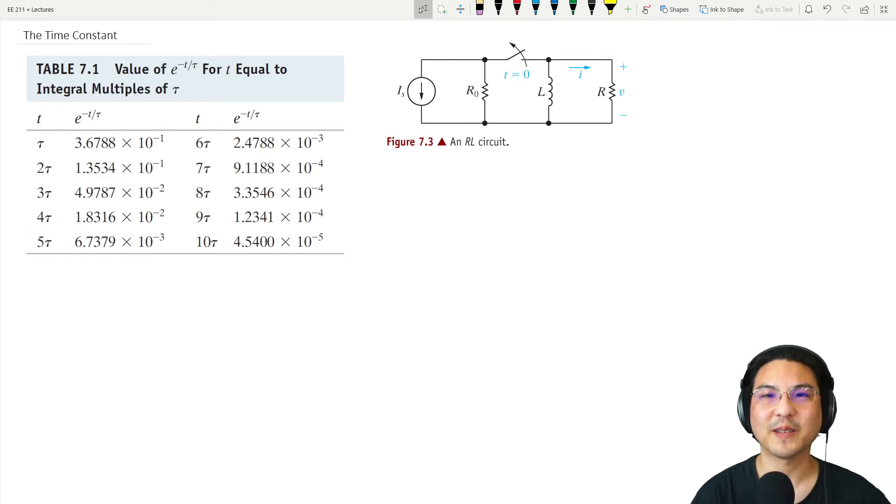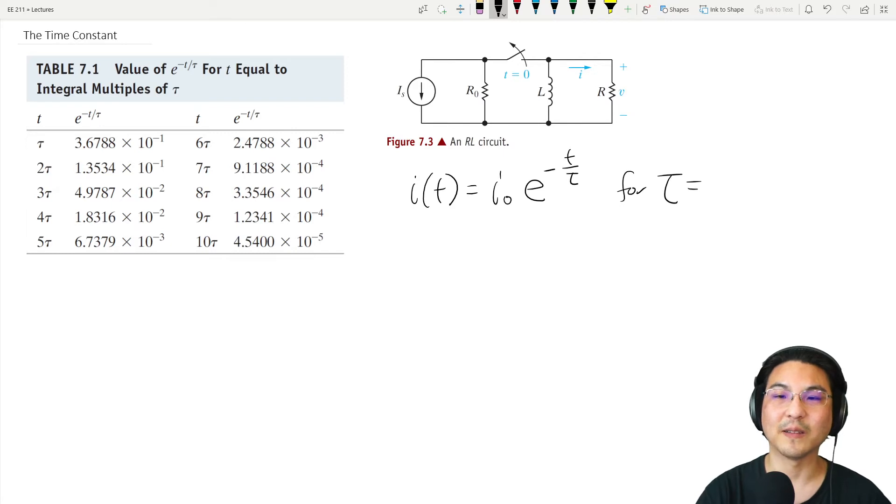Let's talk about the time constant for the RL circuit we just covered. The current through the inductor would look something like this: e to the minus T over tau, for time constant tau. In this example, R over L.